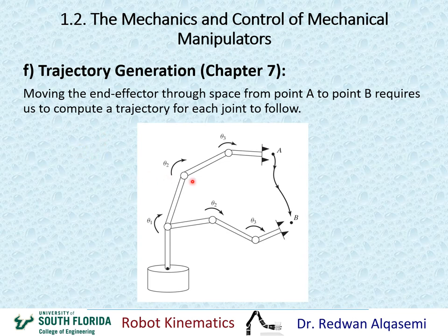For trajectory generation, whenever we want to move the end effector from point A to point B, we always have to create a trajectory for the end effector — whether linear or non-linear — and also create a trajectory for each joint. If we follow these joint trajectories, the end effector should follow its own trajectory. We'll talk about trajectories of joints and end effectors in chapter seven of this course.